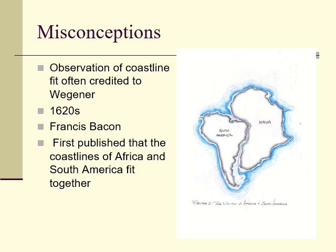Now there were some misconceptions. He had an observation of coastline that was often credited only to Wegener. People thought only Alfred had discovered that, and that's not true. People began talking about the continents looking like a jigsaw puzzle clear back in the 1620s. Francis Bacon was the first one who published that the coastlines of Africa and South America fit together — and he was an author, not a scientist. Alfred Wegener didn't discover that, but he took it a little bit further.